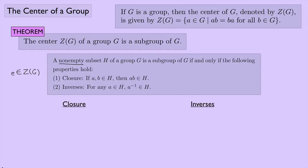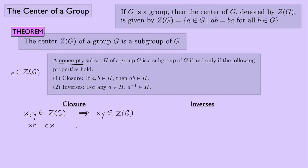Let's do a sketch of a proof. First let's check closure — that means if we take any two elements in the center and apply the binary operation, we should get something else that's in the center. Let's pick two elements X and Y in the center. We need to show that X times Y is also in the center. Since X and Y are in the center, they commute with any element in G. So if C is some element in G, we know X times C equals C times X, and Y times C equals C times Y. We need to show that XY times C equals C times XY.